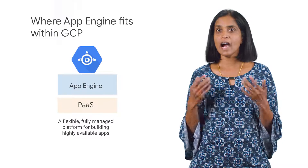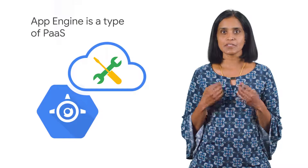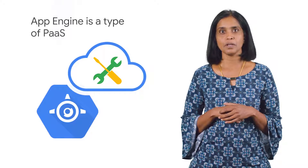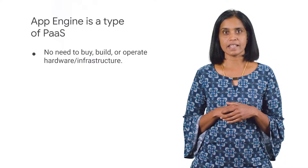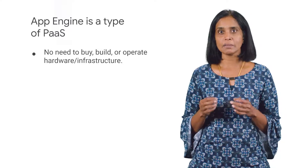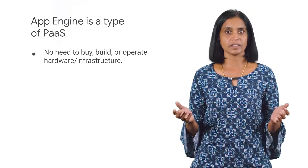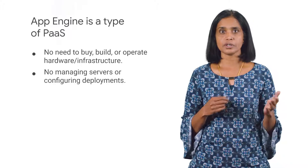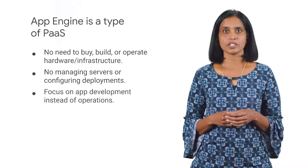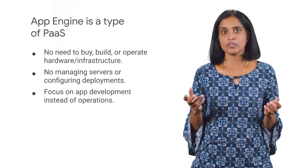App Engine allows you to have high-availability apps without a complex architecture. As a fully managed environment, App Engine is the perfect example of a computing platform provided as a service. App Engine can save organizations time and cost in software application development by eliminating the need to buy, build, and operate computing hardware and other infrastructure. This includes no server management and no need to configure deployments, allowing engineering teams to focus on creating high-value applications instead of no-value operations work.